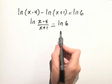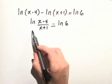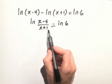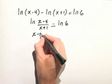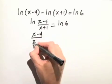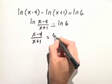Now we have another logarithm property that states if we have one logarithm equal to another logarithm, we can simply set the arguments equal to each other. So (x-4)/(x+1) equals 6.